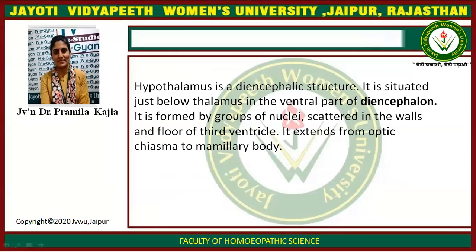Hypothalamus is a diencephalic structure. It is situated just below the thalamus in the ventral part of the diencephalon. It is formed by a group of nuclei scattered in the wall and floor of the third ventricle. It extends from the optic chiasma to the mammillary body.